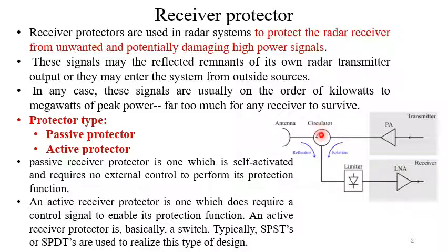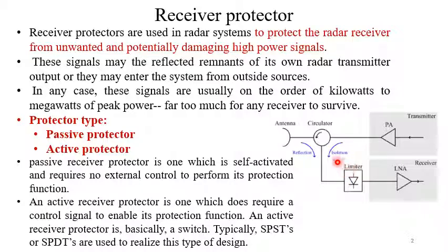Although the circulator isolation is very high, since the transmitted power is extremely high — on the order of a few megawatts peak power — there is a chance that some power may leak through and enter the receiver. To protect the receiver from this high power, we must have a circuit called a limiter. The limiter's duty is to eliminate that high power by grounding it, so that no power reaches the low noise amplifier or the receiver.